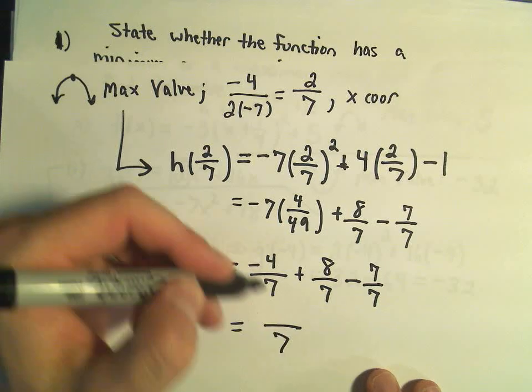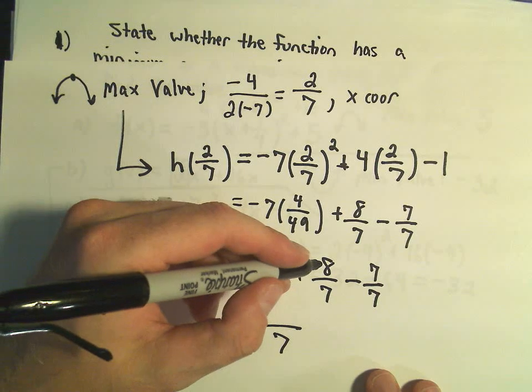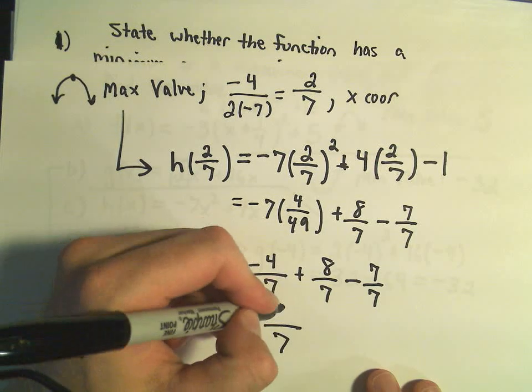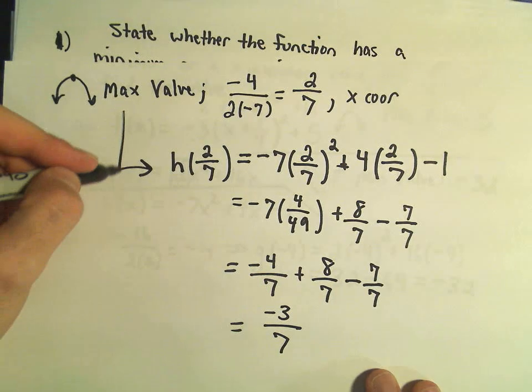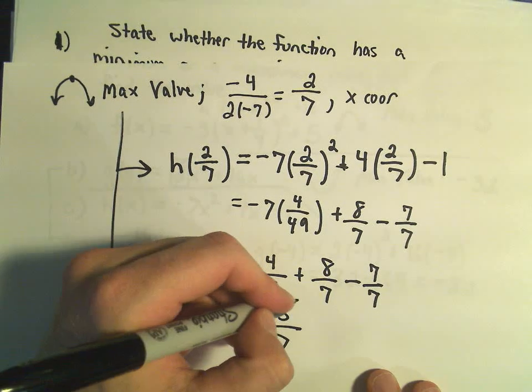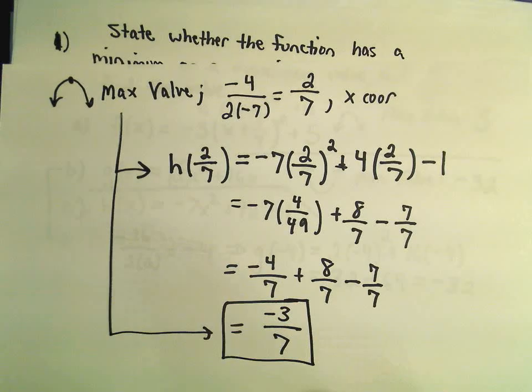Well, we do the arithmetic in the numerator. Negative 4 plus 8 is 4. 4 minus 7 is going to be negative 3. So I'm getting this to be the maximum value. The biggest y value that you're ever going to hit is going to be the value negative 3 sevenths.